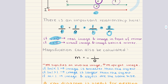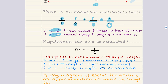We can determine the size and orientation of the image using the magnification formula: magnification equals negative i divided by o. The negative sign indicates that a positive magnification results in an upright image, while a negative magnification results in an inverted image. If the absolute value of magnification is less than 1, the image is smaller than the object; if it equals 1, the image and object are the same size.